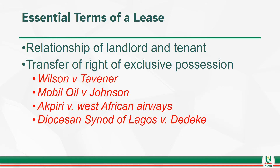Moving on, the essential terms of a lease are as follows. First, there is the relationship of landlord and tenant — the lessor and the lessee. And then there is the transfer of the right of exclusive possession, so the lessee has exclusive possession. With that comes the right to exclude third parties from the property. There are many cases on this. For instance, in the case of Mobile Oil v Johnson, there was a problem as to the term — it wasn't clear what the term of the lease was.